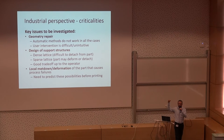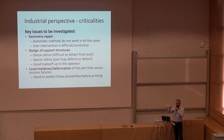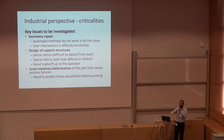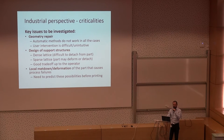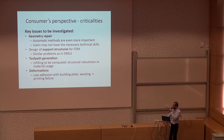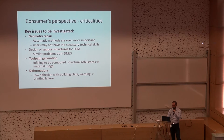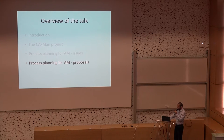In metal printing, a laser fuses metal particles, but the laser has enough power that it affects not only the layer being fused but also the layers below, which can deform — so if you are printing very thin features, these are probably distorted. We need to predict all these possibilities. We also did the same investigation from a consumer's perspective, and things are even worse because consumers have less technical skill.